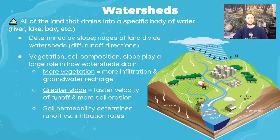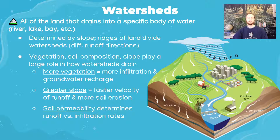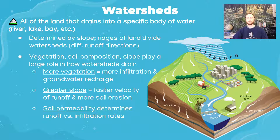There are other factors important to consider when thinking about watersheds: soil composition, vegetation, and slope. The more vegetation a watershed has, the more infiltration we're going to have. Rainwater will be slowed and taken into the ground — roots will absorb some, but plants also make the ground more permeable, making it easier for water to infiltrate rather than run off.